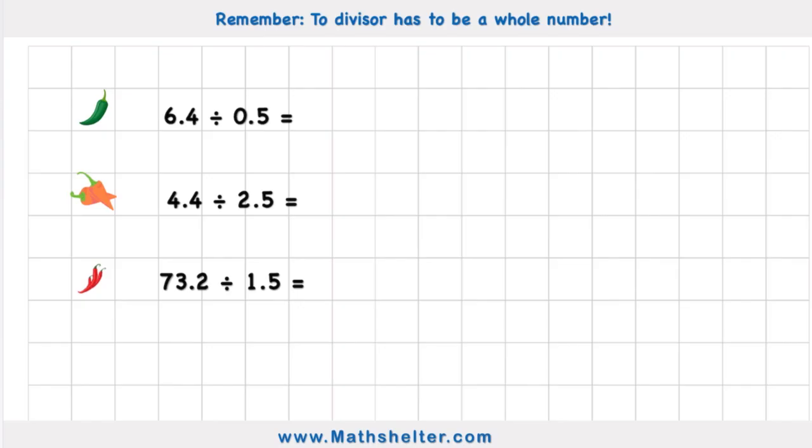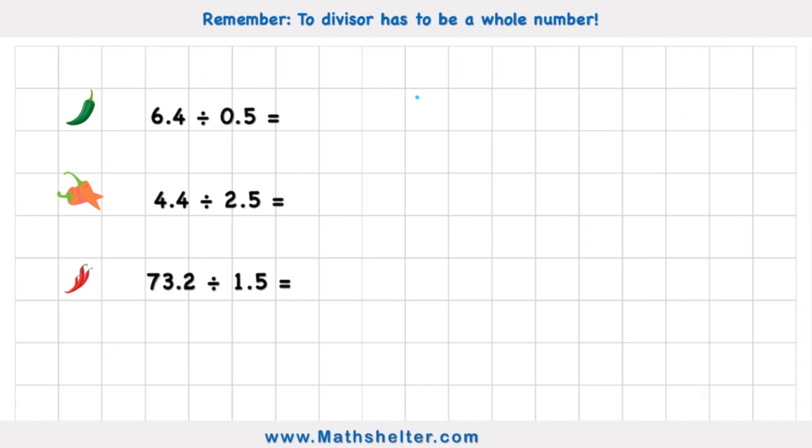Today we're going to be using short method of division so hopefully this will be quite quick. Especially with this little trick we're going to learn. So 6.4 divided by 0.5 means that 6.4 sits inside of our bus stop and 0.5 sits outside. Well we need to remember today that divisor has to be a whole number. The divisor is the number outside of our bus stop. It wouldn't matter if this is a decimal but this divisor has to be a whole number.